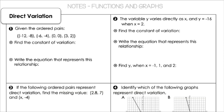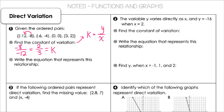Let's start with direct variation in example one. We have these ordered pairs, and the first thing we're going to do is find the constant of variation. Remember, to find it we do y divided by x. Taking the y value and dividing by x — since it's a negative divided by a negative, it's positive two-thirds. So the constant of variation is two-thirds. For direct variation, the equation is the constant times x.